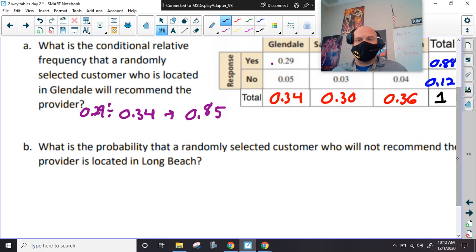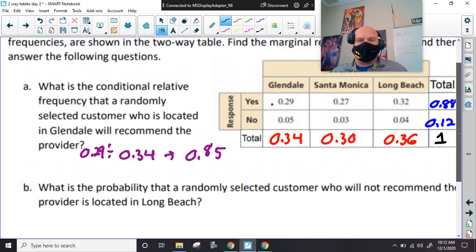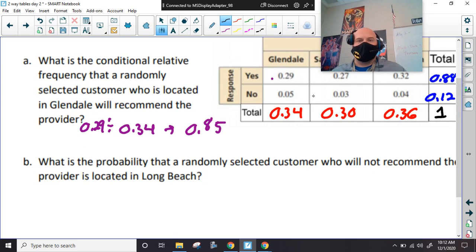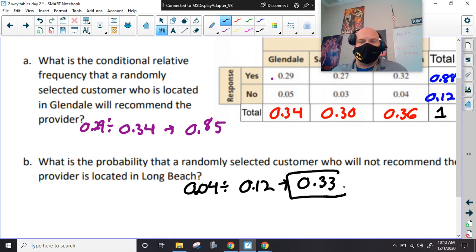All right. Well, there's a probability that when would not recommend them that they're provided from Long Beach. So, Long Beach, this is, all right. So, this is a no. So, that's going to be this one. So, we're going to be dividing by 0.12. And, that they're from Long Beach. So, this is 0.04. Not times, divided. All right. And, it's like 0.33 repeating, or 3.3.